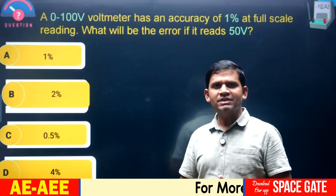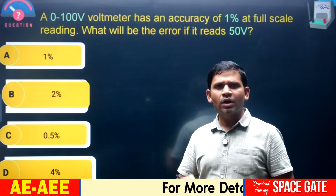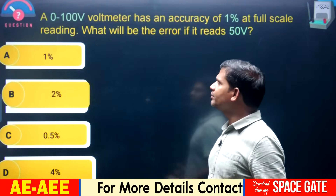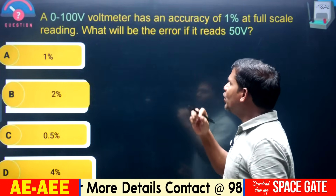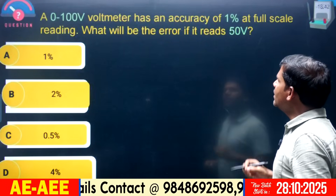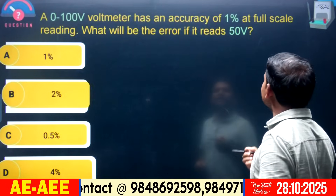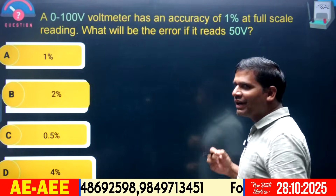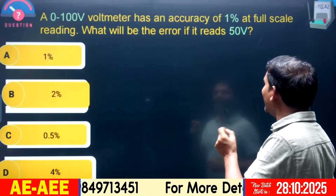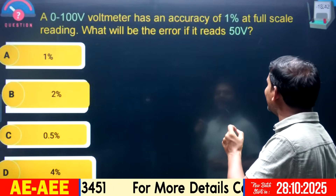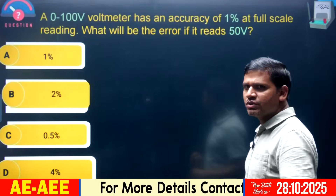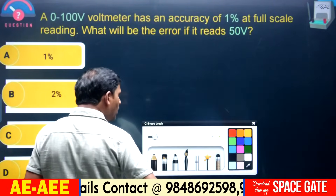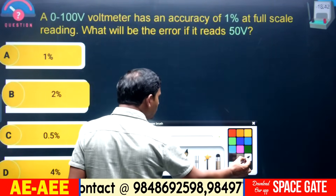Dear aspirants, concentrate on this question on limiting error calculation. A 0 to 100 volts voltmeter has an accuracy of 1% at full scale reading. What will be the error if it reads 50 volts? This is a most important 5-star model of question.